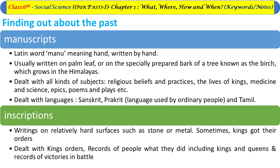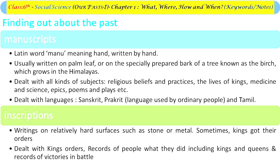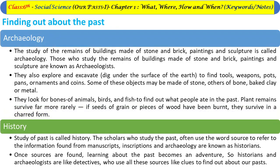Inscriptions are writings on relatively hard surfaces such as stone or metal. Sometimes kings got their orders inscribed. Inscriptions dealt with kings' orders, records of what people did — including kings and queens — and records of victories in battle.